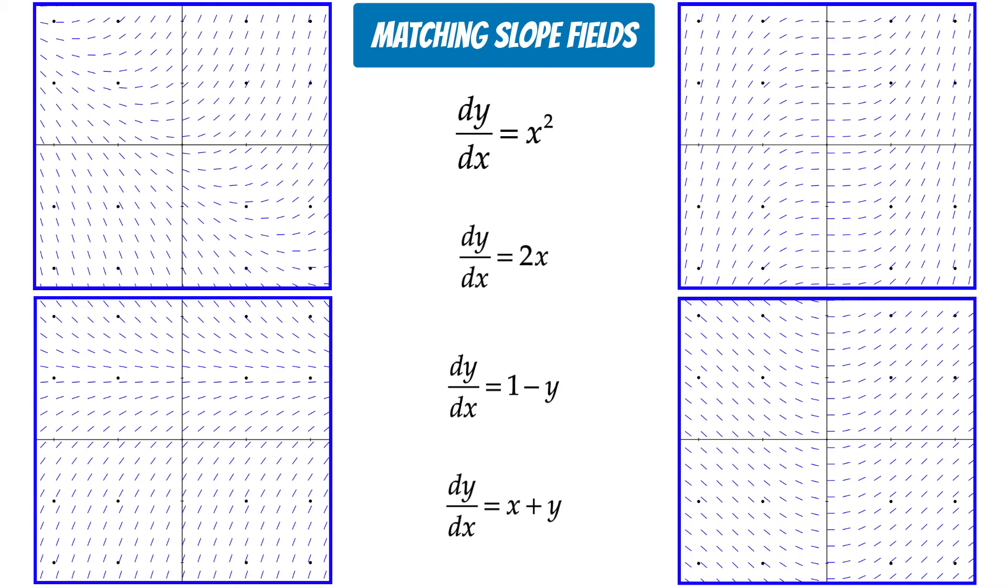To match these, we need to use a bit of logic. The solution to the first differential equation dy/dx equals x squared would be an x cubed function. The slope field with x cubed shapes is in the upper right corner.